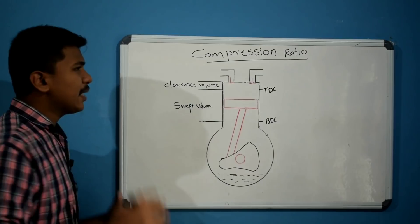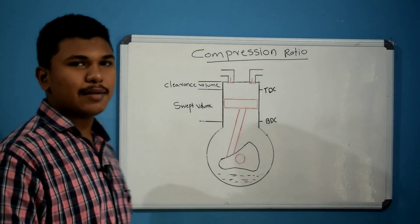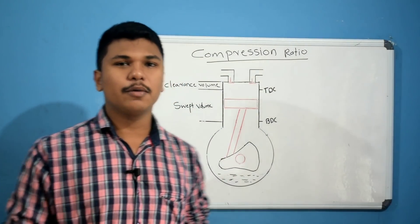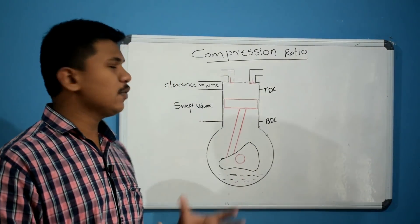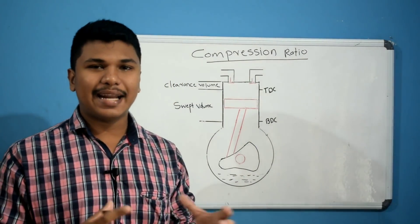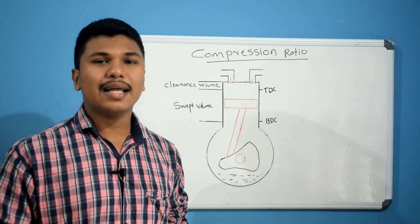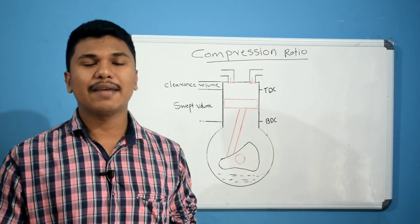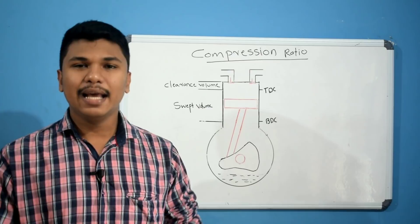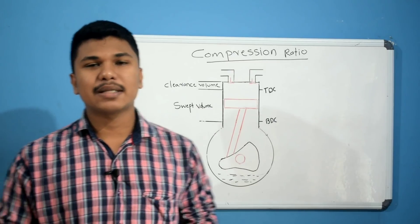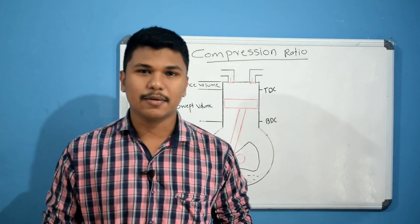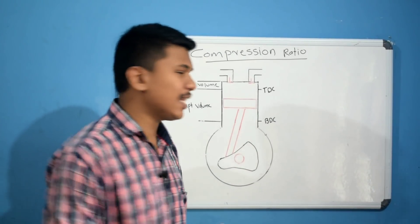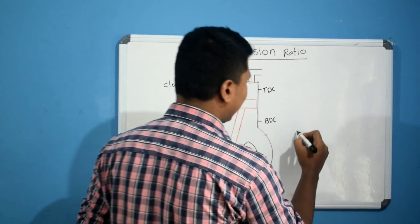The engine compression ratio is defined by how the engine total volume is. We have a clearance volume and the swept volume. The engine total volume is the swept volume plus the clearance volume. The engine's swept volume is denoted as Vs.